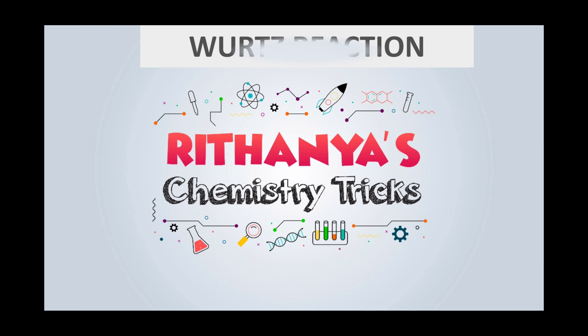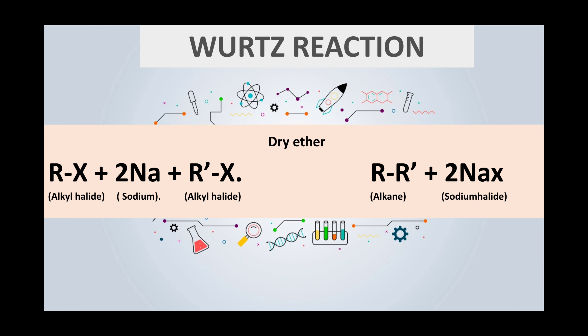Woods reaction — our first keyword is Woods, that means the Wurtz reaction. The next keyword is Alka and Alya. Alka and Alya means alkyl groups, that is R and R'. That means both are the alkyl groups.